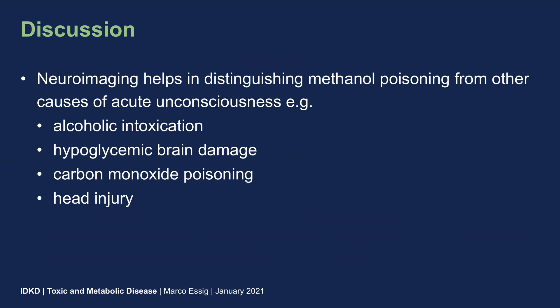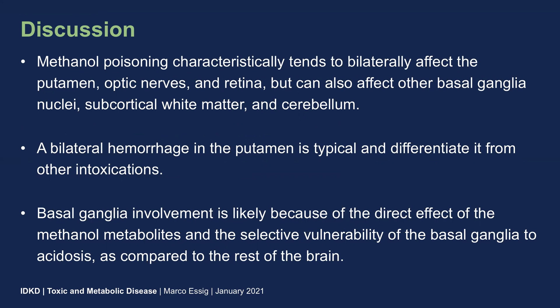Neuroimaging helps in distinguishing methanol poisoning from other causes of acute unconsciousness like alcoholic intoxication, hypoglycemic brain damage, carbon monoxide poisoning, or head injury. Methanol poisoning characteristically, like in our case, tends to bilaterally affect the putamen, the optic nerves, and the retina, and involves the basal ganglia, the subcortical white matter, including the cerebellum. A bilateral hemorrhage in the putamen is typical and differentiates methanol poisoning from other intoxications.